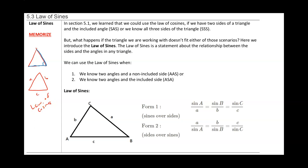In this section we are going to talk about the law of sines. The law of sines is a statement about the relationship between the sides and the angles in any given triangle. You can use the law of sines when you know two angles and a non-included side, or when you know two angles and the included side.